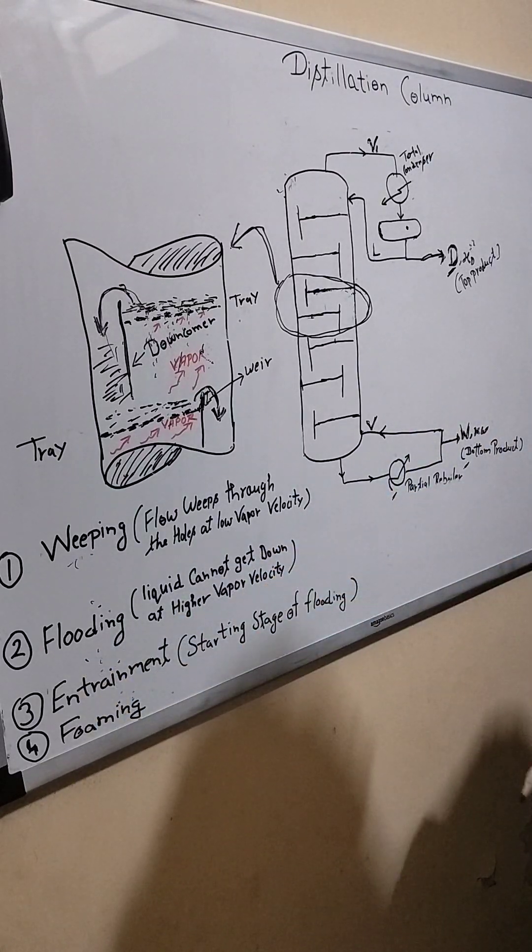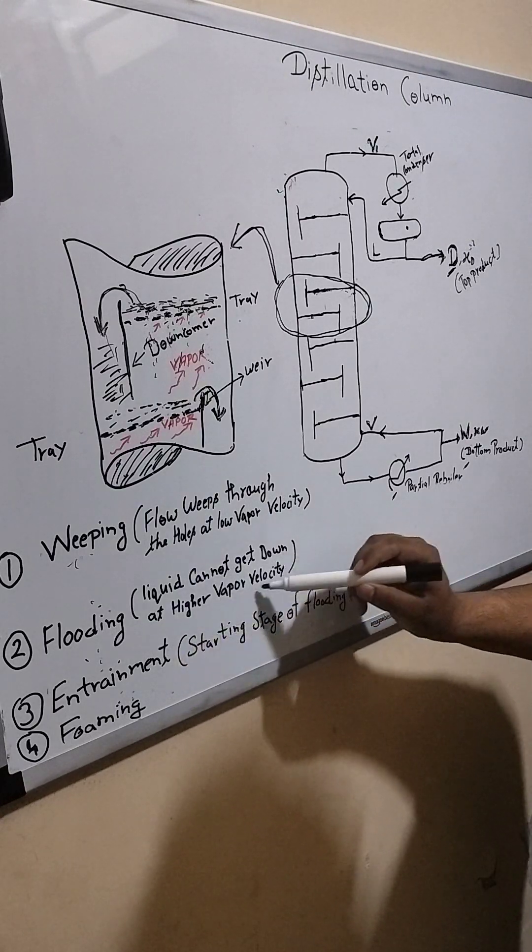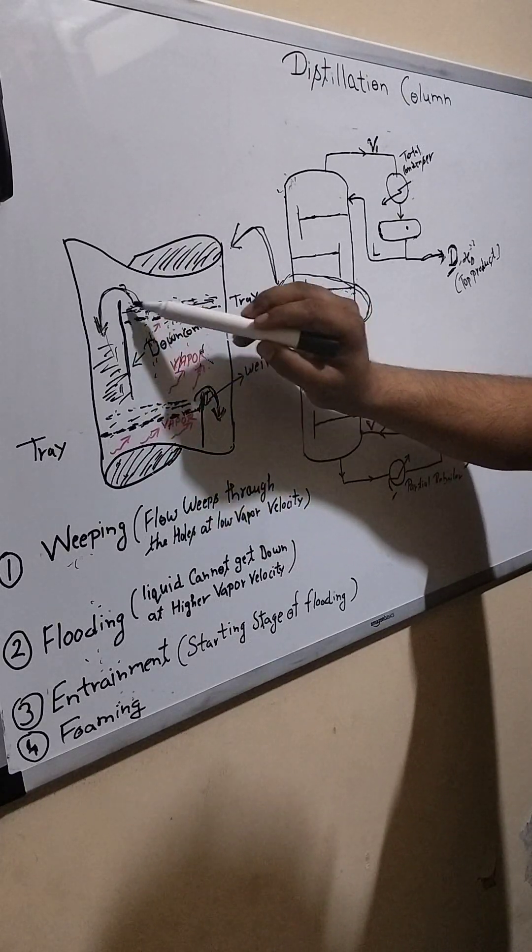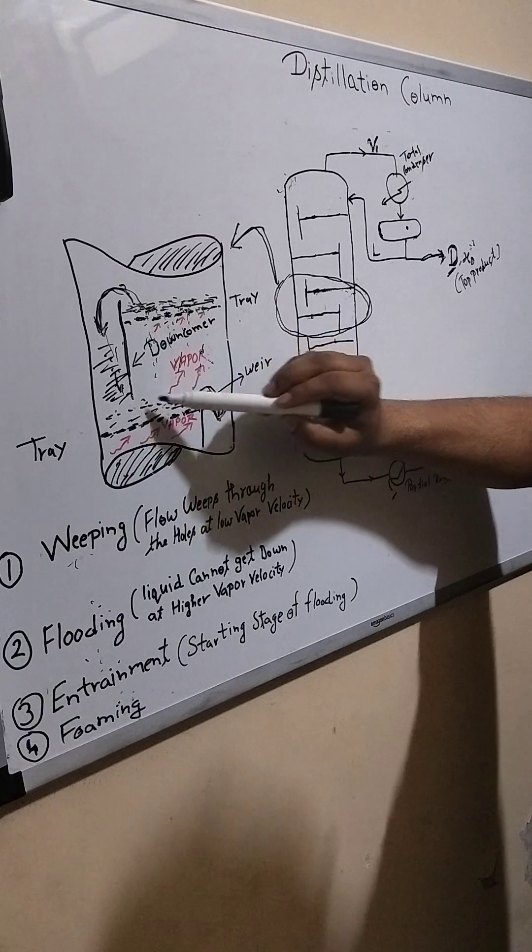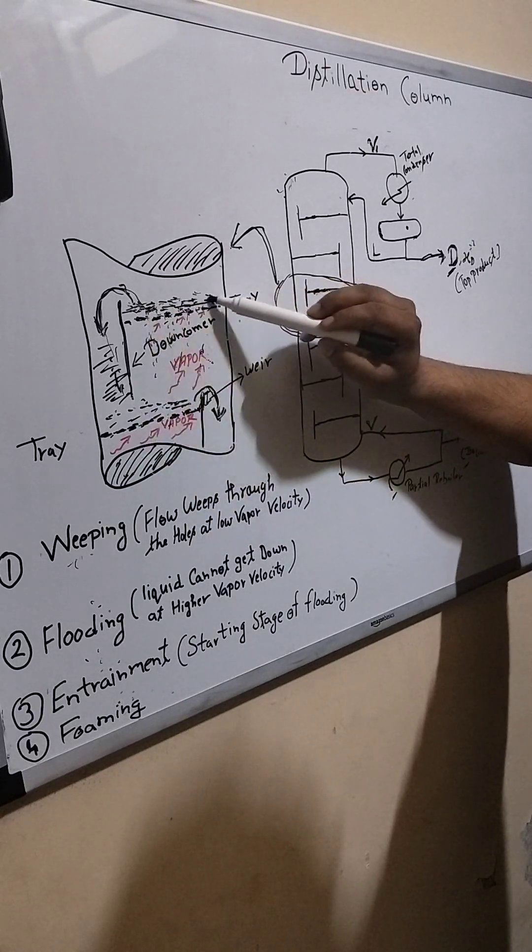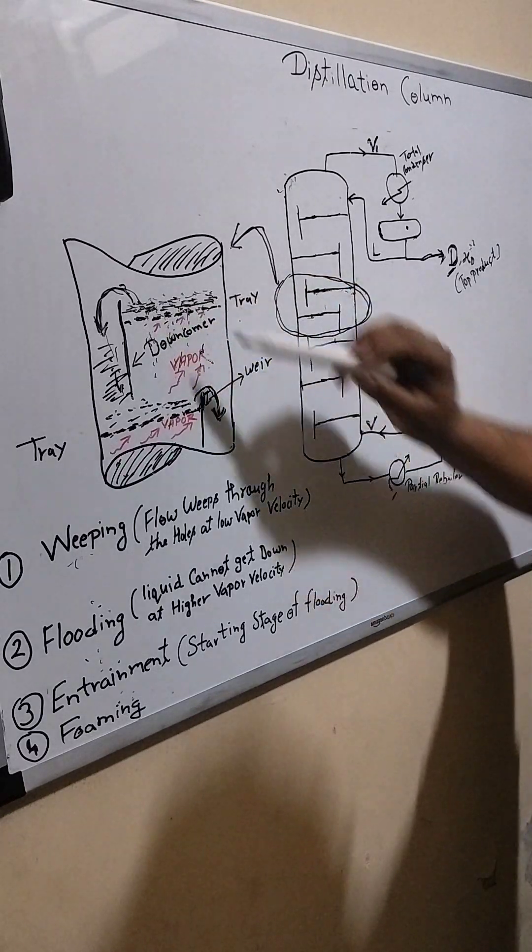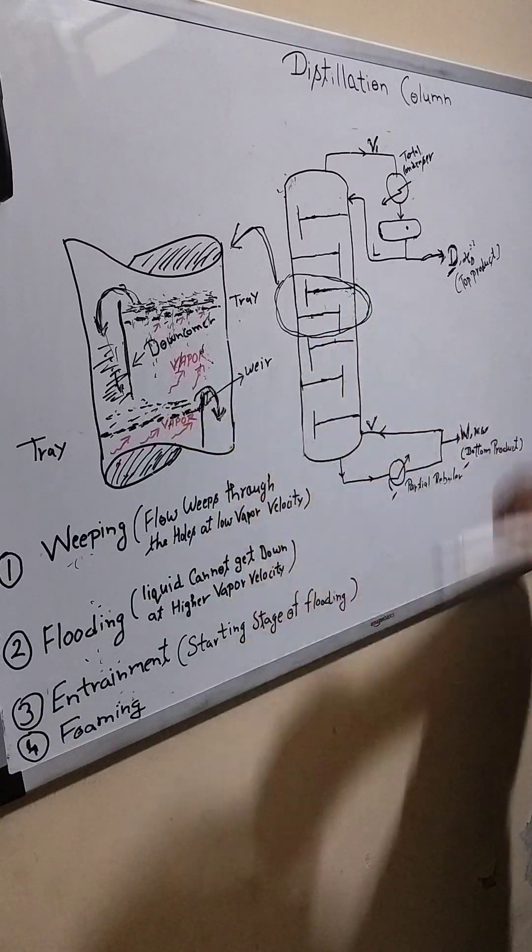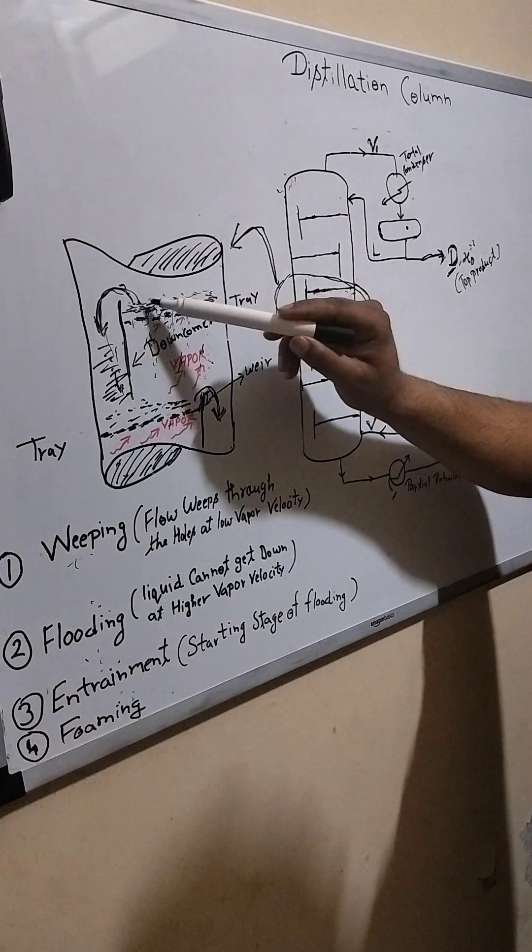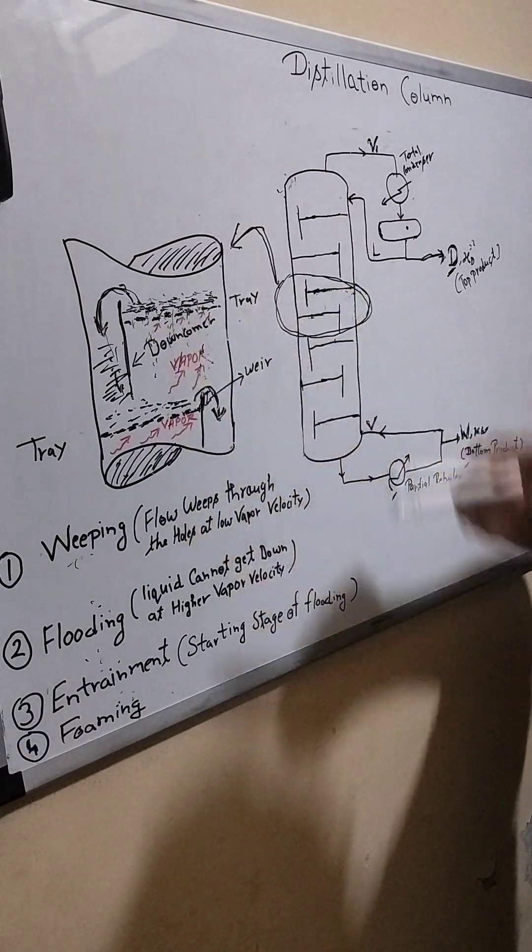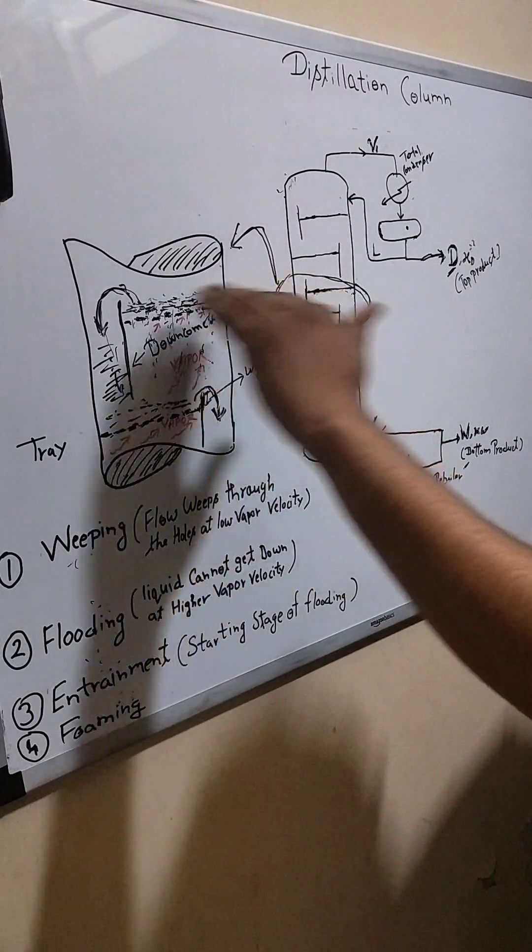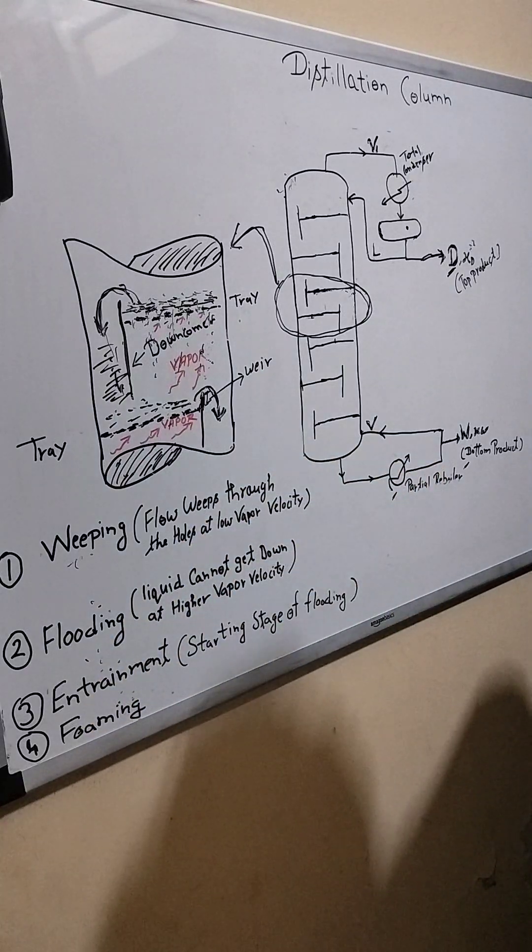And second is flooding. When flooding occurs, liquid cannot get down at higher vapor velocity. Suppose if your vapor velocity is very high, the liquid cannot move in the downcomer, so it will hold here. It cannot move through these holes because vapor velocity is very high. So if the liquid will hold in all the trays, your mass transfer will not occur. You will not get the desired separation which you require.